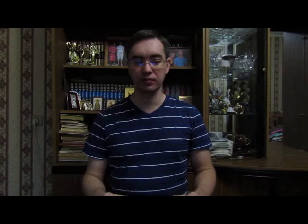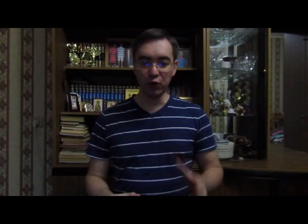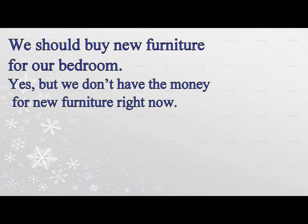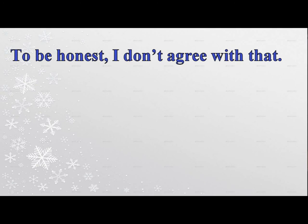'I think there is a better explanation' — Examples: 'Our profits are down this year because our employees are taking too many coffee breaks.' 'I think there is a better explanation. Maybe profits are down because our new website keeps crashing.' 'I don't think I did well on the test because I'm not very smart.' 'I think there is a better explanation. Maybe you didn't do well on the test because you never went to class.' 'Yes, but' — this phrase is used when you partially agree with some points but might not be in complete agreement. Examples: 'I think we should plant a lot of trees in our front yard.' 'Yes, but we don't really have a lot of space to plant more than 8 trees.' 'We should buy new furniture for our bedroom.' 'Yes, but we don't have the money for new furniture right now.' 'To be honest, I don't agree with that' — this is a polite way to disagree with someone.